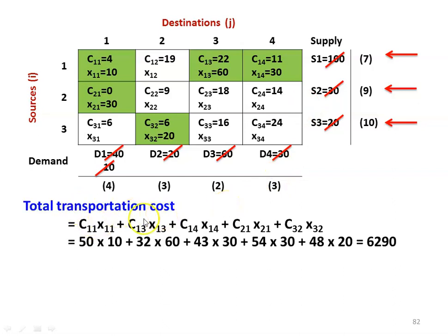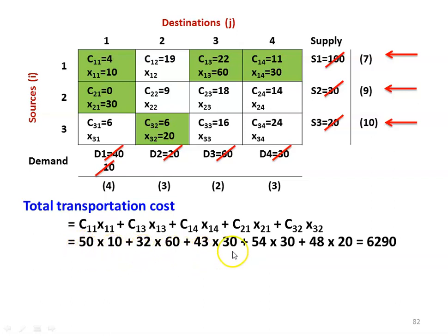The total transportation cost using the original profit matrix: C11·X11 + C13·X13 + C14·X14 + C21·X21 + C32·X32, substituting numerical values: 50×10 + 32×60 + 43×30 + 54×30 + 48×20 = Rs. 6,290.